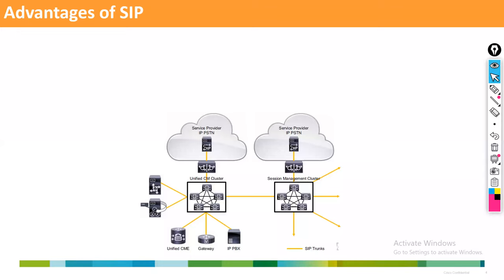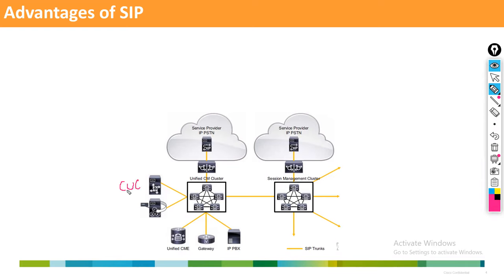Now let's look at the advantages of SIP. Consider a CUCM cluster — you want to connect it to different servers. For example, Cisco Unity Connection (used for voicemail) needs to be integrated with the call manager. SIP protocol can be used for that integration.